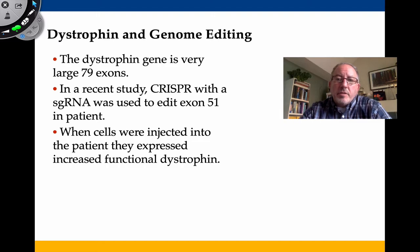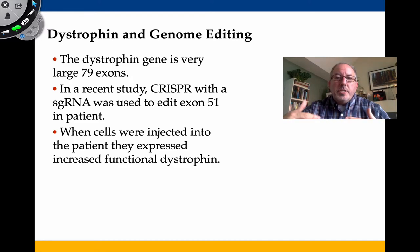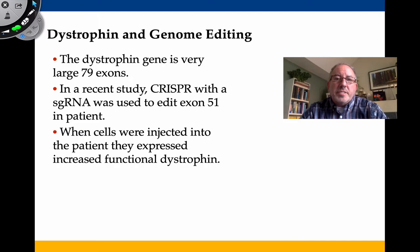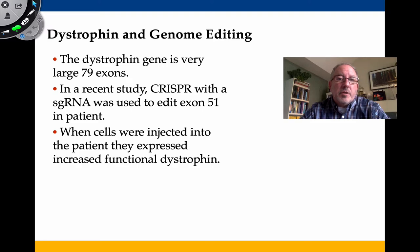Scientists are now turning their attention to CRISPR as an avenue of research for DMD. One challenge is that the dystrophin gene has 79 exon sequences. Recently, CRISPR has used single guide RNA to edit exon 51 in patients, and those patients have been experiencing more functional dystrophin protein as a result. It's encouraging.